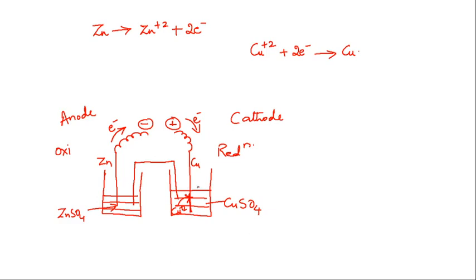The two half-cells are connected by the salt bridge. You can connect a potentiometer or a bulb — it will glow. So this is the Daniel cell that we had studied. Electrons are given out when oxidation takes place at the zinc electrode, and these electrons are pushed towards the cathode.